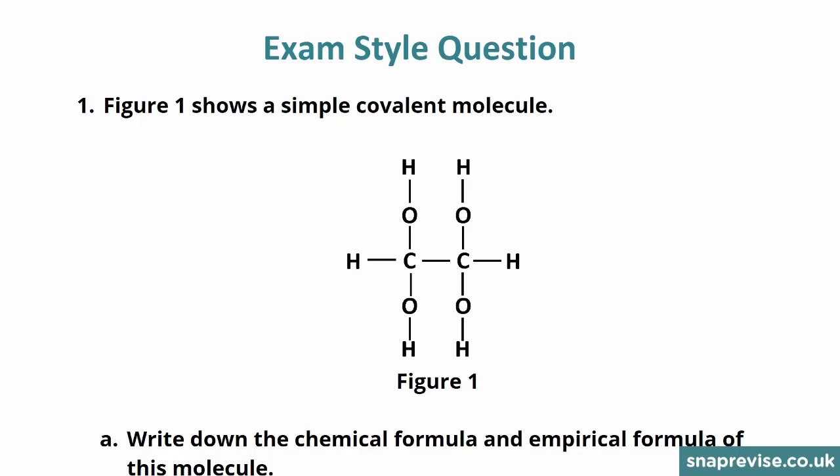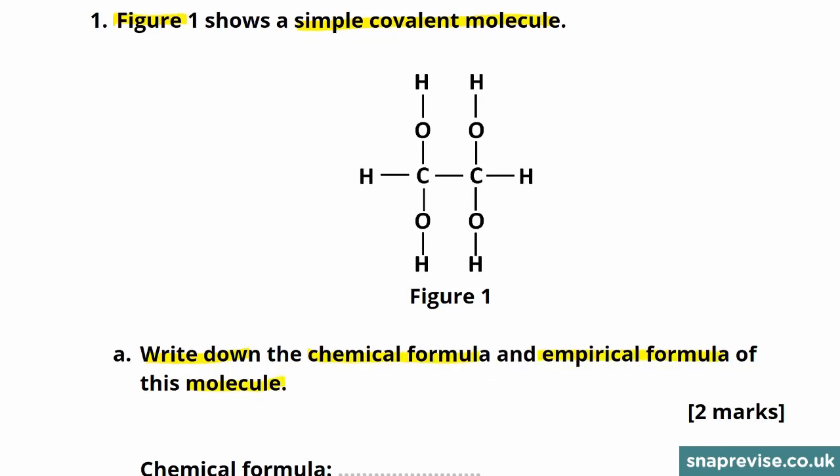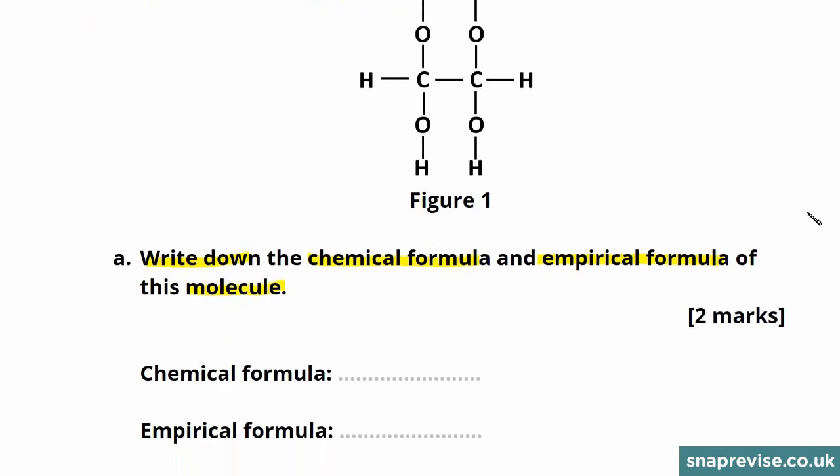The question starts with a figure showing a simple covalent molecule. It asks you to write down the chemical formula and empirical formula of this molecule. You just need to remember that the empirical formula gives you the simplest whole number ratio of atoms of each element present within a compound.